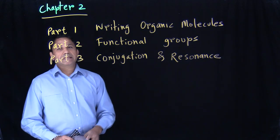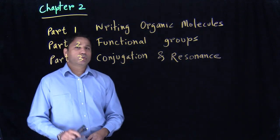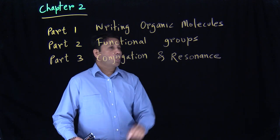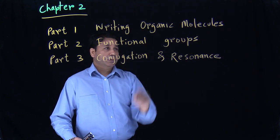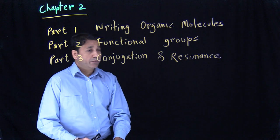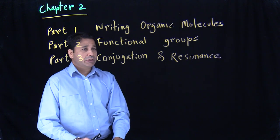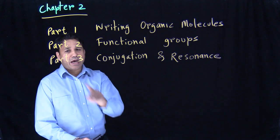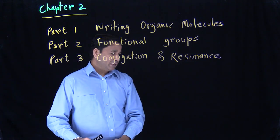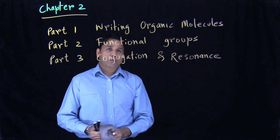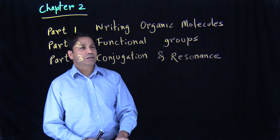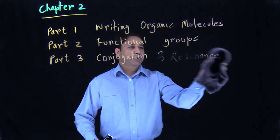Chapter two is divided into three parts. Part one is we will learn how to write organic molecules. In part two, we will try to identify different functional groups, the organic functional groups we have. And part three will be conjugation and resonance. So what we'll do now is we'll start with part one, which is writing organic molecules.